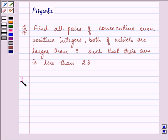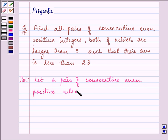Now, let us discuss this question. It says, find all the pair of consecutive even positive integers. So, let a pair of consecutive even positive integers be x and x plus 2.